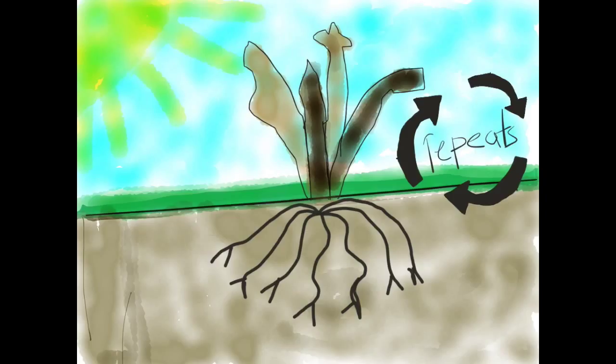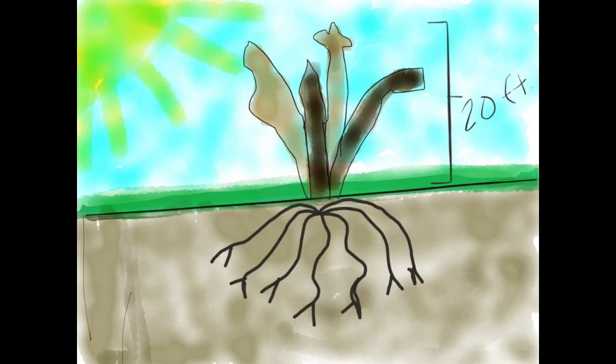Newborn American Chestnut Trees cluster around the old American Chestnut Tree. Because the blight kills the tree, the American Chestnut grows to be about 20 feet tall in the Milliken Mills Woods.